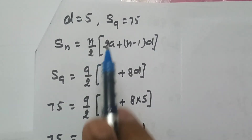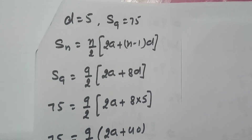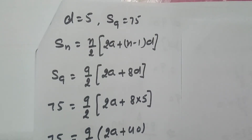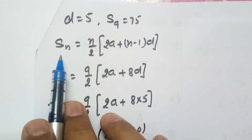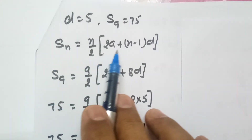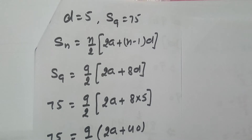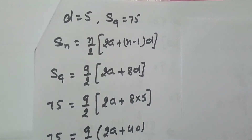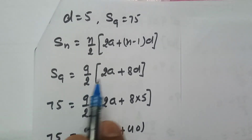We will start from the sum of 9 terms. We will use the formula: sum of terms equals n by 2 into 2a plus n minus 1 into d. Since d is given, we will substitute its value. So S₉ equals 9 by 2 into 2a plus 9 minus 1, which is 8, into d.